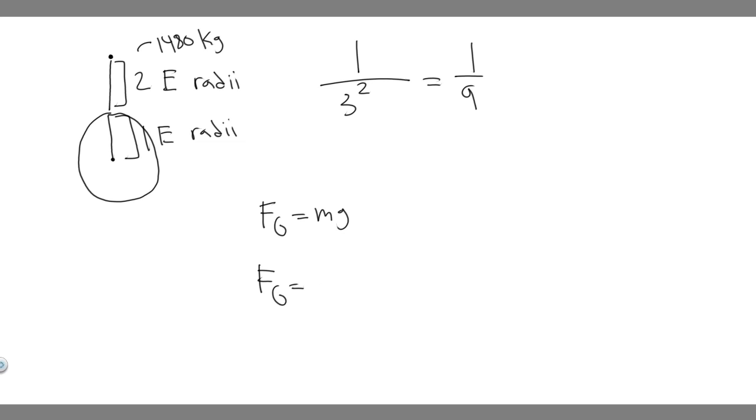So it's going to be equal to 1 over 9 times m, which is going to be the mass of our object, which is 1,480 times the force of gravity, which is 9.8. And so if you go ahead and do this, 1,480 times 9.8 divided by 9, you're going to get 1,610.